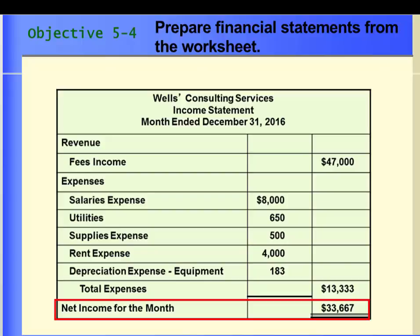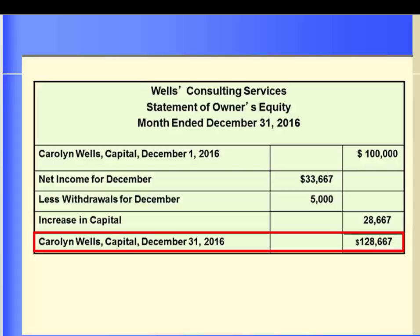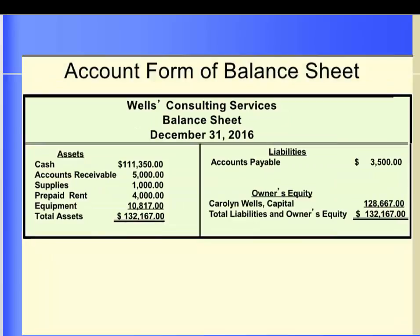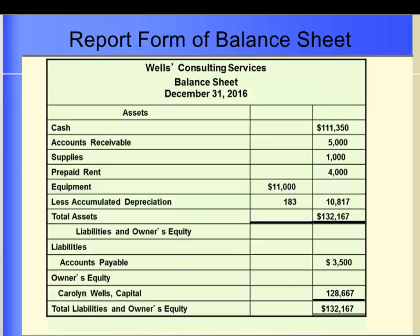Preparing the financial statements is the fifth step in the accounting cycle. Objective 4 requires that we prepare an income statement, statement of owner's equity, and balance sheet from the completed worksheet. Use the income statement section of the worksheet for the amounts to carry to the income statement — it is now easy to prepare by transferring the numbers into a proper income statement format. The statement of owner's equity reports the changes that have occurred in the owner's financial interest during the reported period. The beginning capital balance came from the unadjusted trial balance column, and the amount of net income came from the worksheet. In addition to the account form of a balance sheet used in Chapter 4, there is also a report form of a balance sheet, which shows the balance sheet data in a vertical format. In actual practice, the report form is used most often.